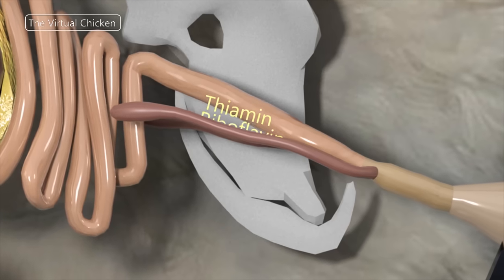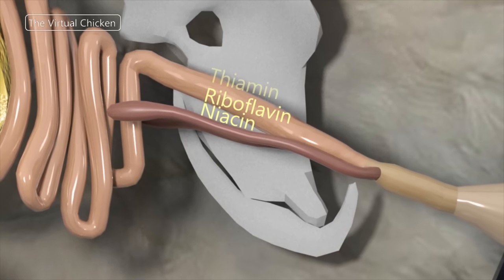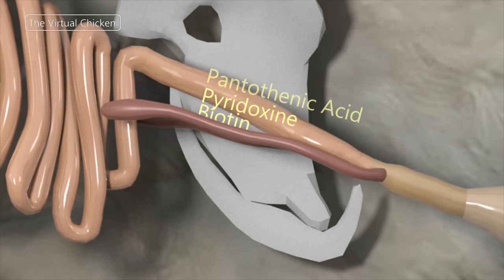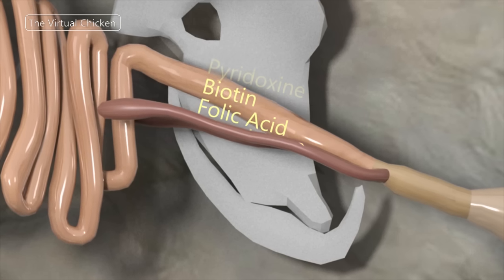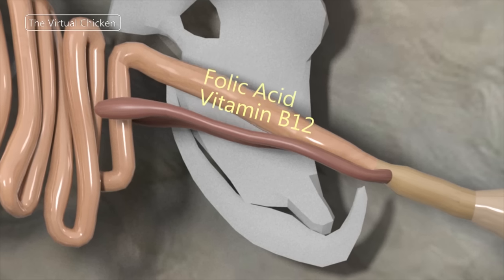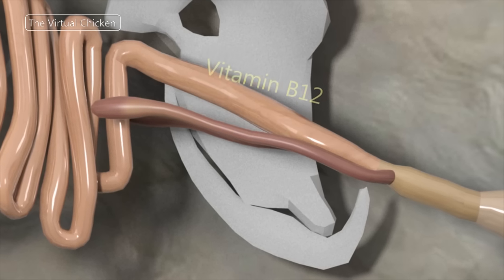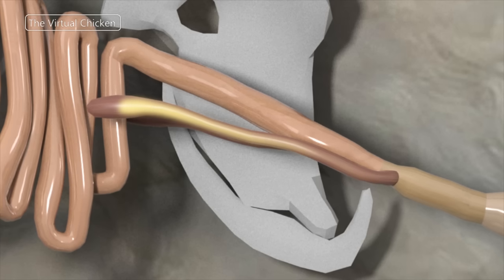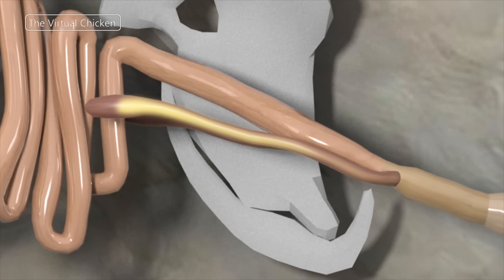These include thiamine, riboflavin, niacin, pantothenic acid, pyridoxine, biotin, folic acid, and vitamin B12. Because the ceca are located so close to the end of the digestive tract, however, few of those produced nutrients are absorbed and available to the chicken.